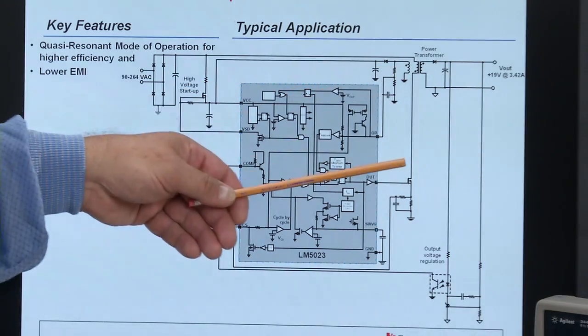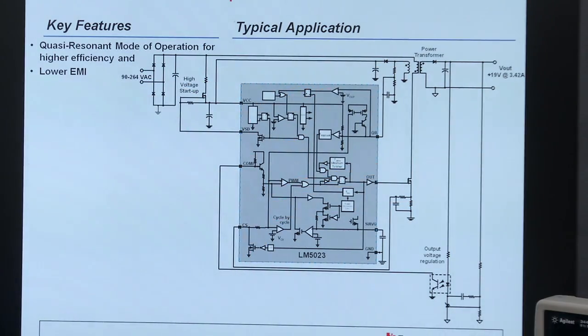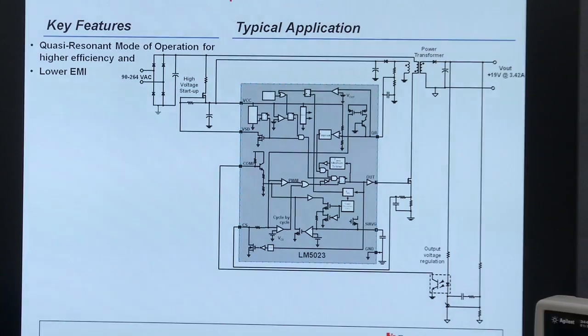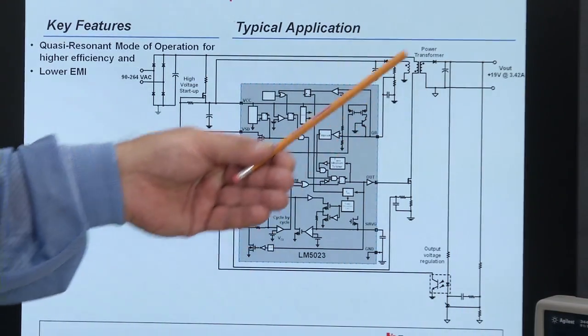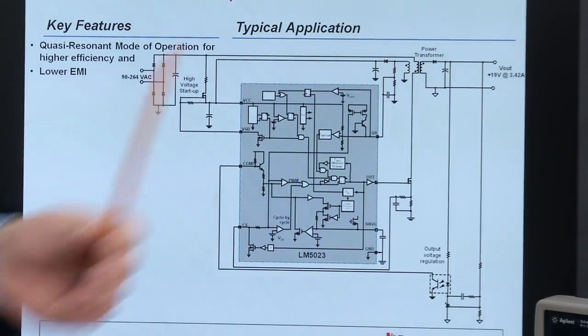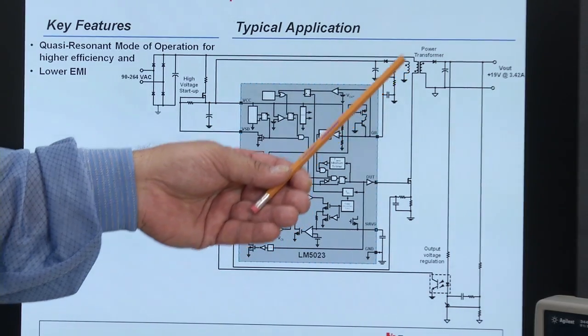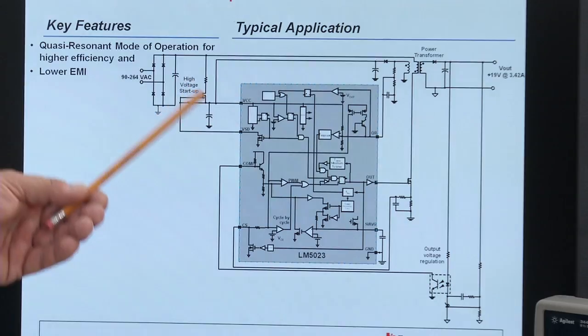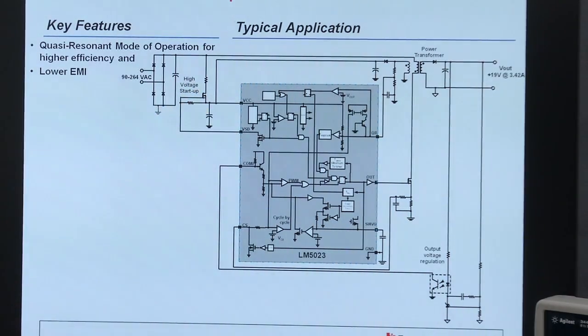At this point, the primary current continues to flow, but it now charges up the output capacitor of our flyback MOSFET. At some point in time, the output voltage is high enough to forward bias the output diode, and we transfer the energy from the transformer primary to the load. We also transfer energy to the VCC capacitor, providing bias power to the controller.